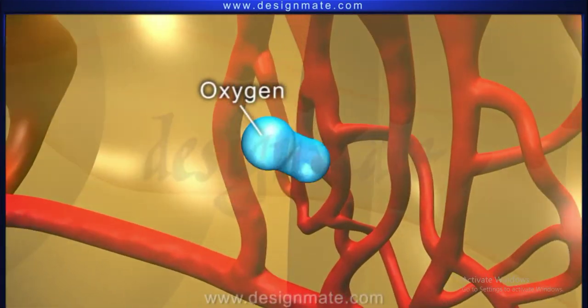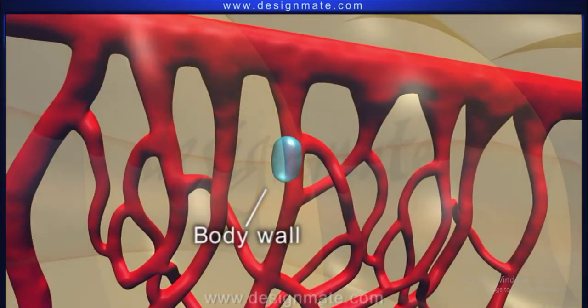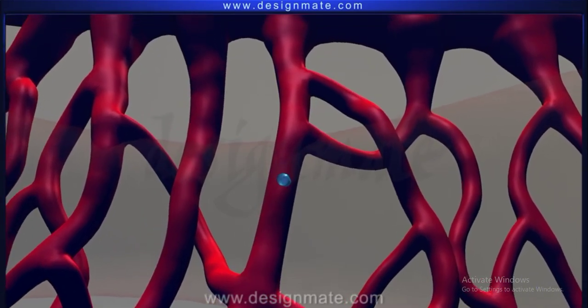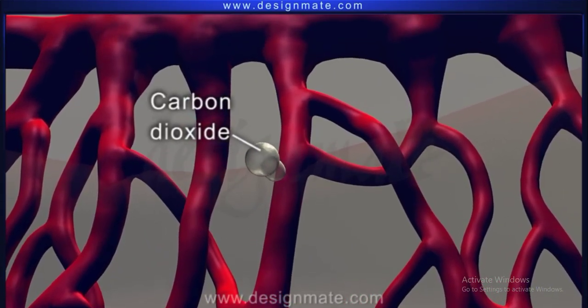In earthworms, exchange of gases takes place through the body wall with the help of moist and vascularized skin, since they don't have any specialized respiratory organ.